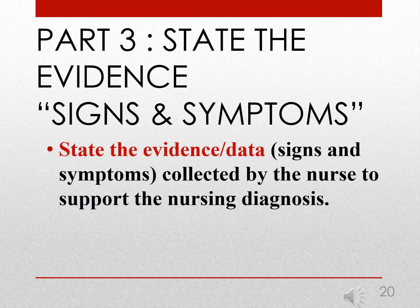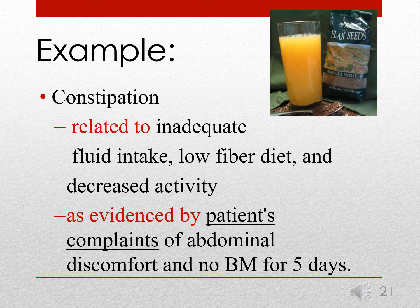When writing the nursing diagnosis, we started with the diagnostic label related to whatever etiology — so constipation related to decreased gut motility. Now we're going to state the evidence, the signs and symptoms, such as decreased bowel sounds or no BM for three days. This example shows constipation, with etiology related to inadequate fluid intake, low fiber diet, or decreased activity, as evidenced by the patient's complaints of abdominal discomfort and no BM for five days.